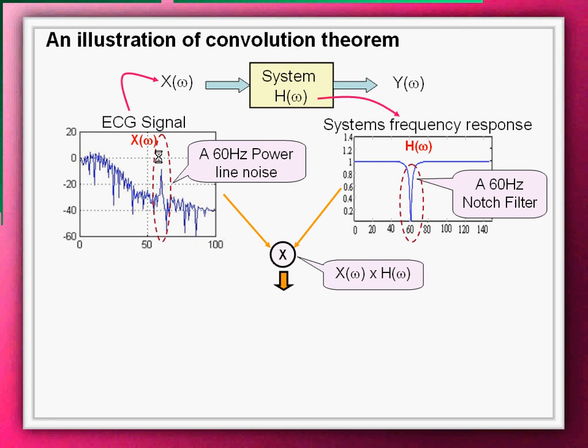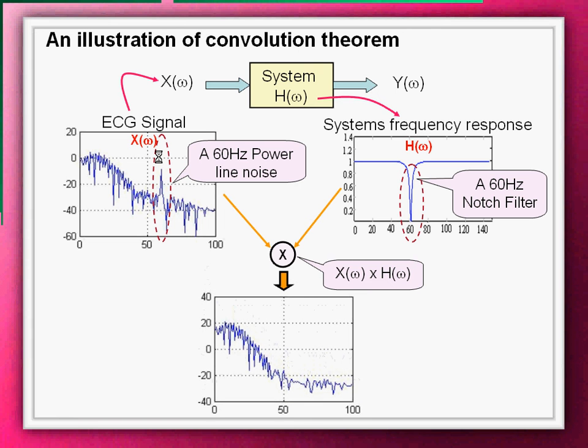The two signals are now convolved. As per the convolution theorem, the convolved output is simply the product of the signals in frequency domain. This is the resultant output spectrum. As seen, the 60 Hz power line noise is eliminated. The signal is now a pure ECG signal or a filtered ECG signal.